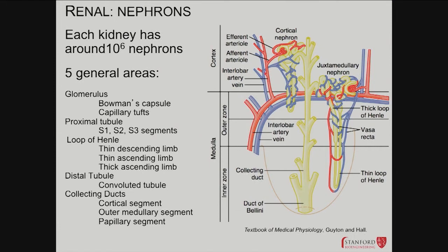Blood comes in through the afferent arteriole and leaves through the efferent arteriole, at which point it's pretty much venous blood going back into the renal vein.